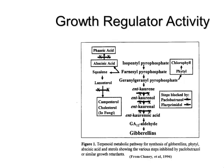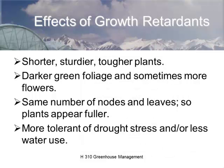Using these anti-gibberellin compounds, the plants will be shorter despite shade, stronger and tougher, with darker foliage and more flowers. The plants will have the same number of nodes because anti-gibberellins only affect internode length, so they'll appear fuller. That's why we use them — remember, we're going for an aesthetic result.